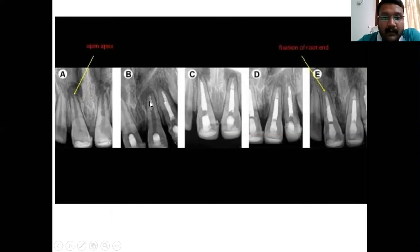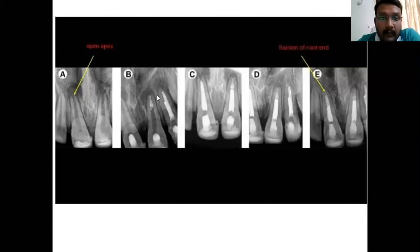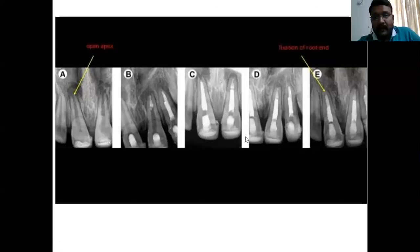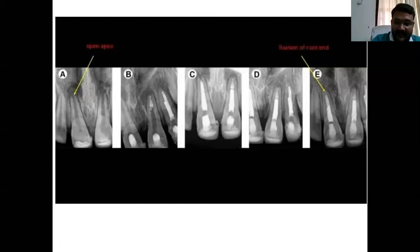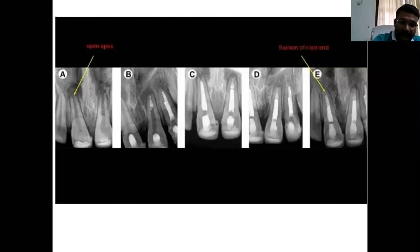After placing MTA, you recall the patient the next day because MTA takes nearly 24 hours to set and form a hard mass. Next day, you can recall and obturate the tooth, give a GIC or composite coronal restoration, and proceed for a crown. This is called single-visit apexification — the entire procedure is completed within one or two days. The same procedure can be done for biodentine also, recalling the patient the next day and continuing with RCT.